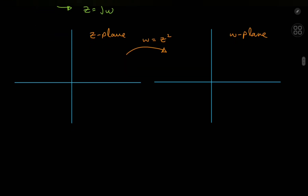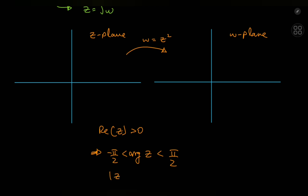Let's look at a certain type of curve in the z-plane. Let's focus on the half-plane where Re(z) is positive. This restriction on the real part of z enforces a restriction on the argument of z: the argument of z will be bounded between π/2 and −π/2. Let's further restrict the modulus of z to some fixed positive r. A curve in the z-plane satisfying these restrictions looks like a semicircle, where we exclude the values on the imaginary axis.